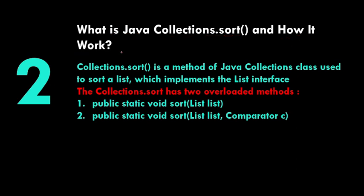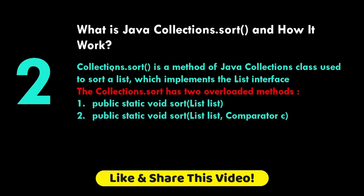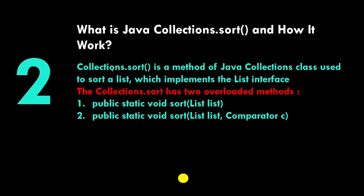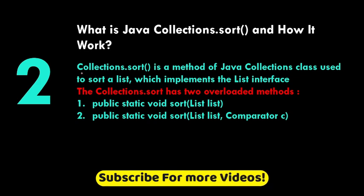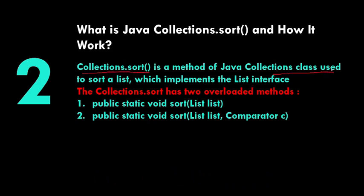If you have knowledge of collections, one good answer to this question can demonstrate your depth of understanding. Collections.sort() is a method of the Java Collections class used to sort a list. All elements in the list are comparable because the list implements the Comparable interface — that's why we can apply Collections.sort() on it.